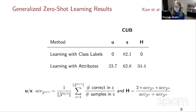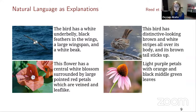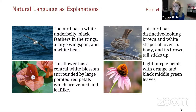One problem is the requirement for attributes from experts. To eliminate that, we thought we could show images to Amazon Mechanical Turk users — novice users — and ask them to describe whatever they found interesting, constrained to talking about the object and not the background or actions. We asked them to mention at least three properties using at least ten words. Some annotators followed these rules and some did not, but overall they gave us sentences that are quite visually discriminative.